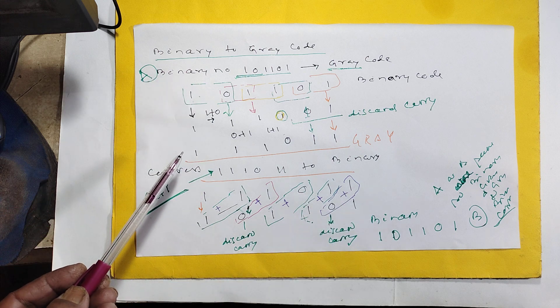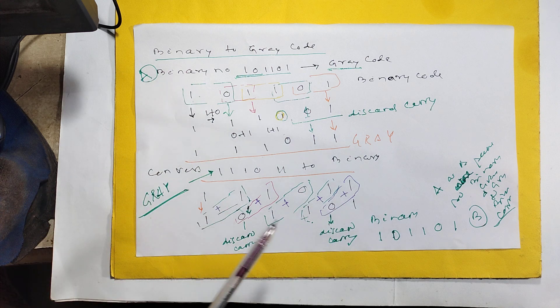So this is the binary to gray. We cross check it. Gray to binary. So this is correct.